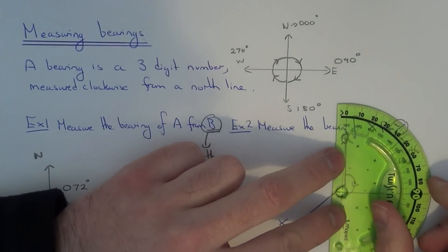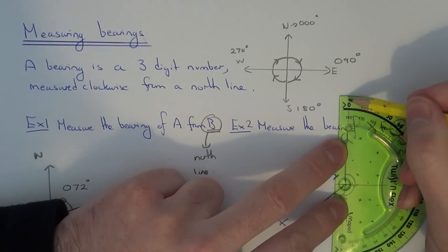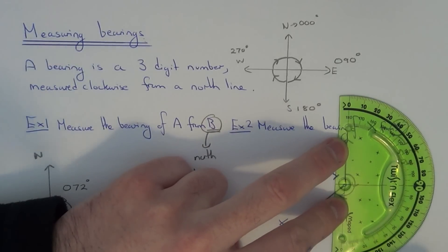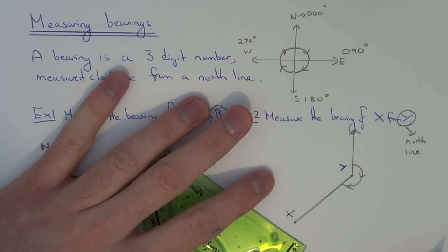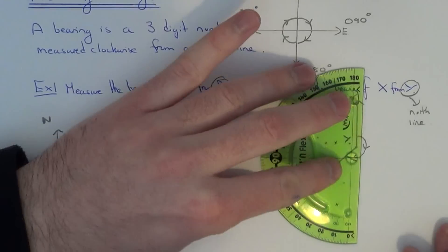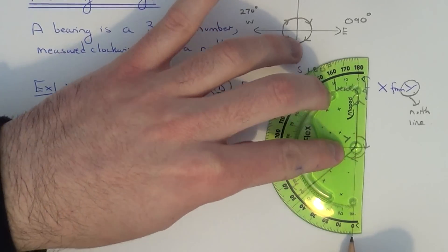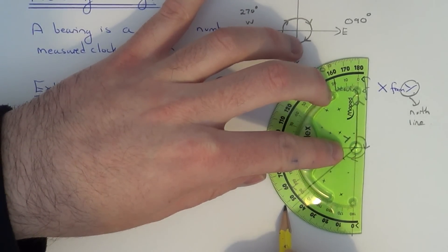So if you get your protractor. All the way around to here is 180 degrees. But we've got a little bit extra to measure. So if we turn our protractor around. We have to measure an extra 49 degrees.